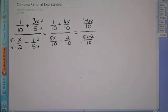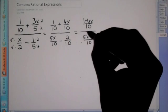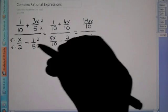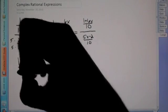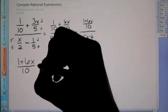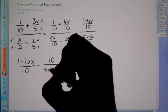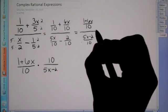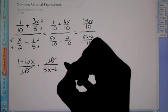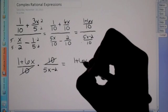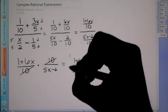Now what we learned earlier is that you can change any division problem into a multiplication problem. Here we have 1 plus 6x over 10 divided by 5x minus 2 over 10. You can change any division problem into multiplication by changing to a multiplication sign and flipping the bottom fraction, so it becomes 10 over 5x minus 2. Now you'll notice the tens cancel out. You're just left with 1 plus 6x over 5x minus 2, which you can't reduce anything else because of the plus and minus here. So this would be your final answer.